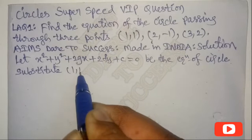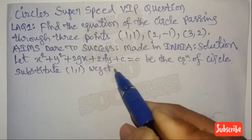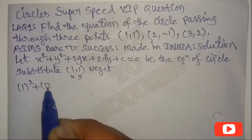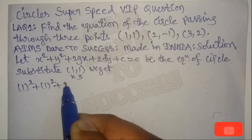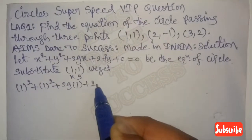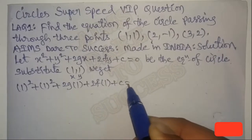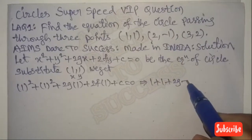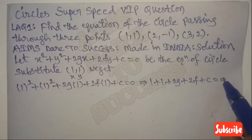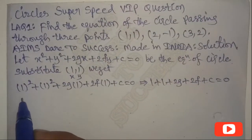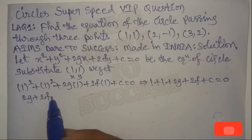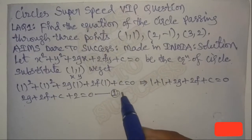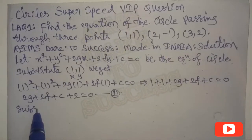By using this standard equation of the circle, you can substitute each given point one by one. First point (1,1): substitute x=1, y=1. We get 1² + 1² + 2G(1) + 2F(1) + C = 0, which gives 1 + 1 + 2G + 2F + C = 0, so 2G + 2F + C + 2 = 0. Let this be Equation 1.